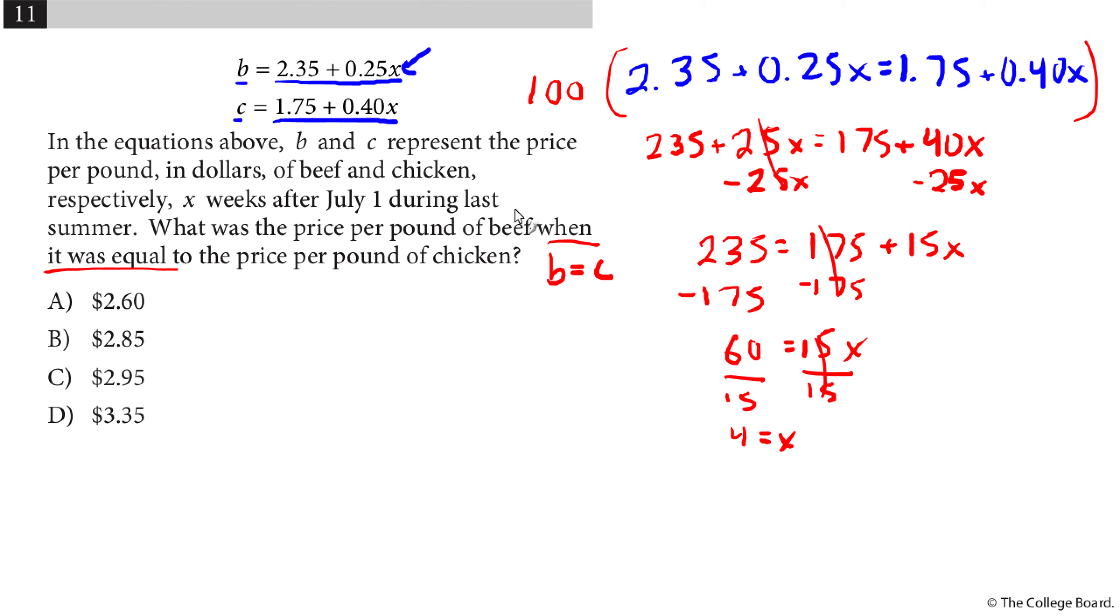However, it asks for the price per pound of beef. Now, if it's equal to chicken, I can actually use either one, but I'll just use the beef equation because that's the one that it specified. So the value of beef 4 weeks in will be 2.35 plus 0.25 times 4. And 0.25 times 4 is 1. You know, 4 quarters is a dollar. So 2.35 plus $1 gives me $3.35, which is right here.